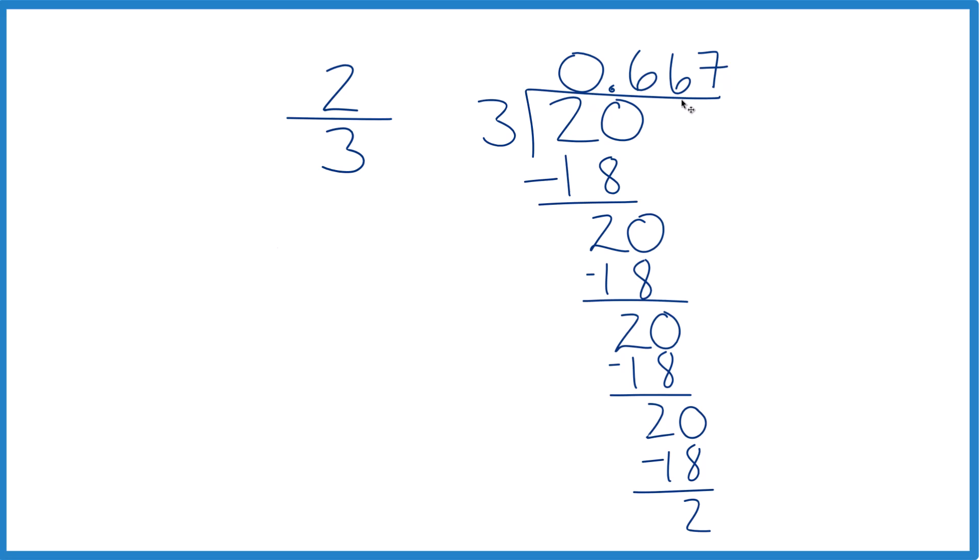If you wanted to round it to the hundredths place, so here, one, two. So we're going to round up. So this goes to seven here. Get rid of all that. And at the hundredths place, two-thirds would be 0.67.